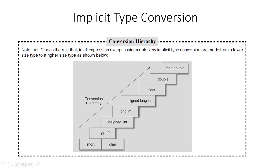If two operands are one int and the other float, then the int will be converted to float, both become float, and the result will be float. If one is float and the other is double, the float is converted to double and the result is double. If one is float and the other is long double, the float is converted to long double. Always the lower converts to the higher and the result is of the higher type — this happens automatically, so we do not have to do anything.